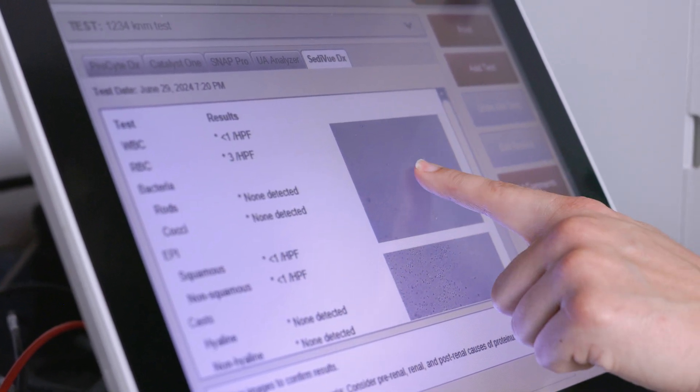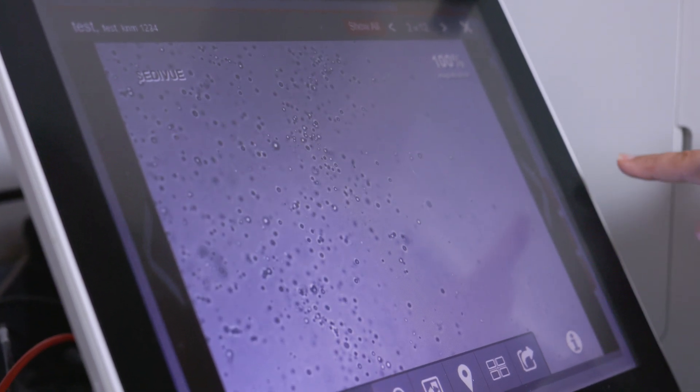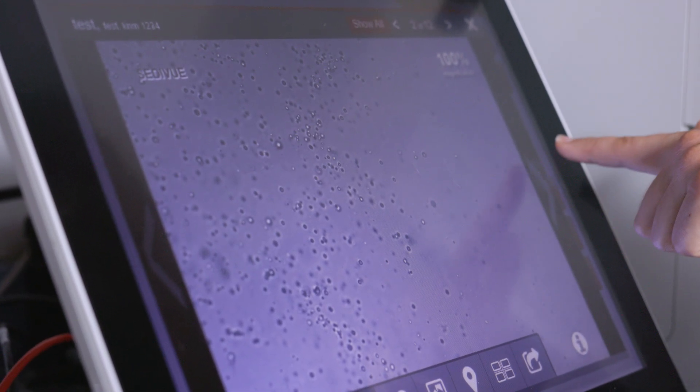And if we click on the images, we can see the different cells that may be present or material that may be present in the urine sample.